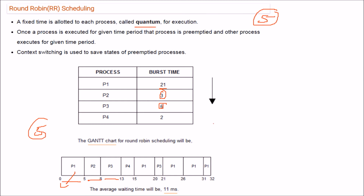After P3 is preempted, it goes back to the ready queue. The cycle continues: P1, P2, P3, P4 in order. P2 has already finished so it doesn't return. P4 only requires 2 cycles, so it completes from time 13 to 15 and does not return either. P2 and P4 are done.